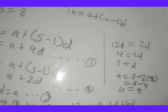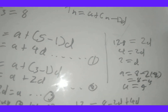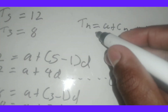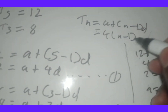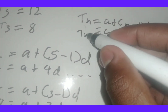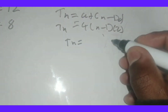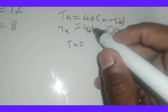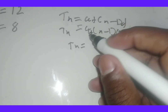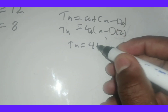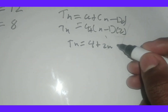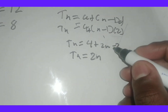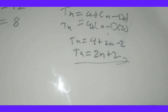Now I can find the general formula of the pattern. Substituting a equals 4 and d equals 2 into the general term: tn equals 4 plus n minus 1 times 2. Expanding gives 4 plus 2n minus 2, which simplifies to tn equals 2n plus 2. That's our general formula.